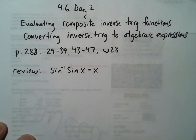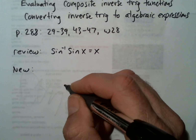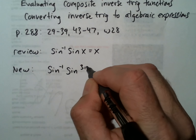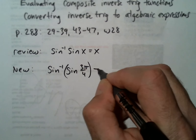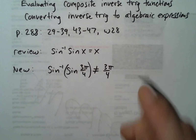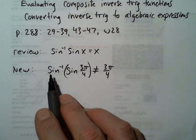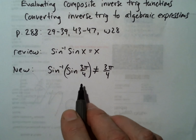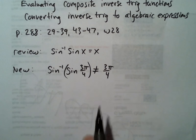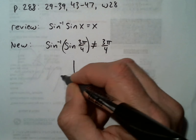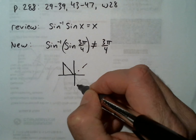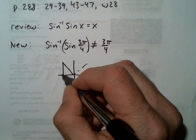We talked about this before, but we have to be careful because we can't just always cancel inverse sine and sine and copy whatever is there. For example, if we look at 3π/4, and we evaluate sine of 3π/4 — locating 3π/4 on the unit circle, we find the 45-45 triangle.